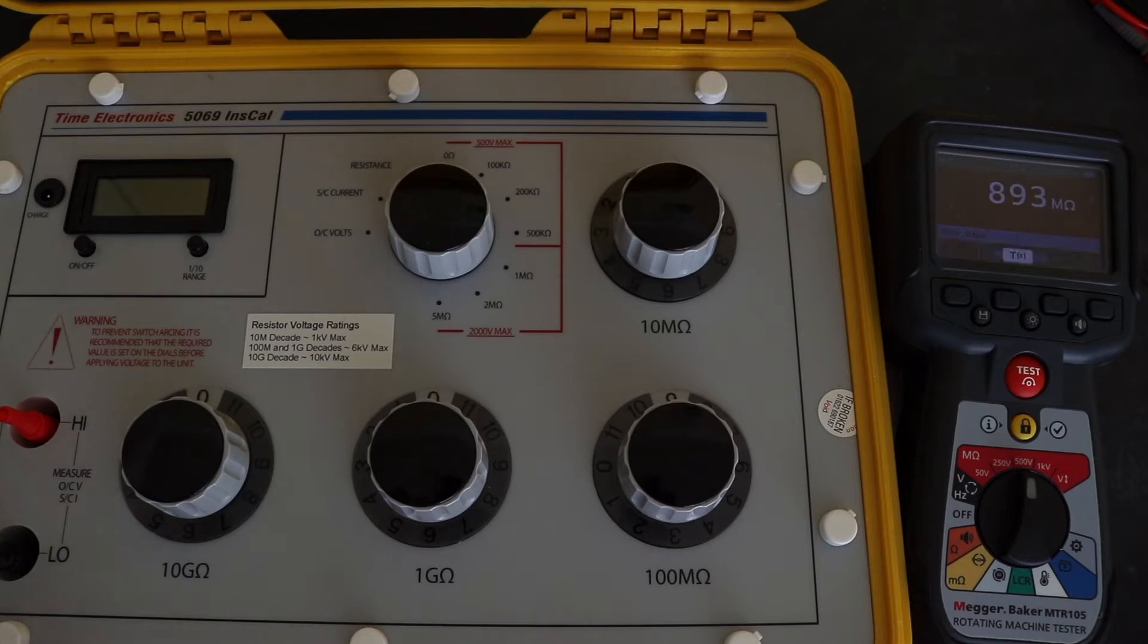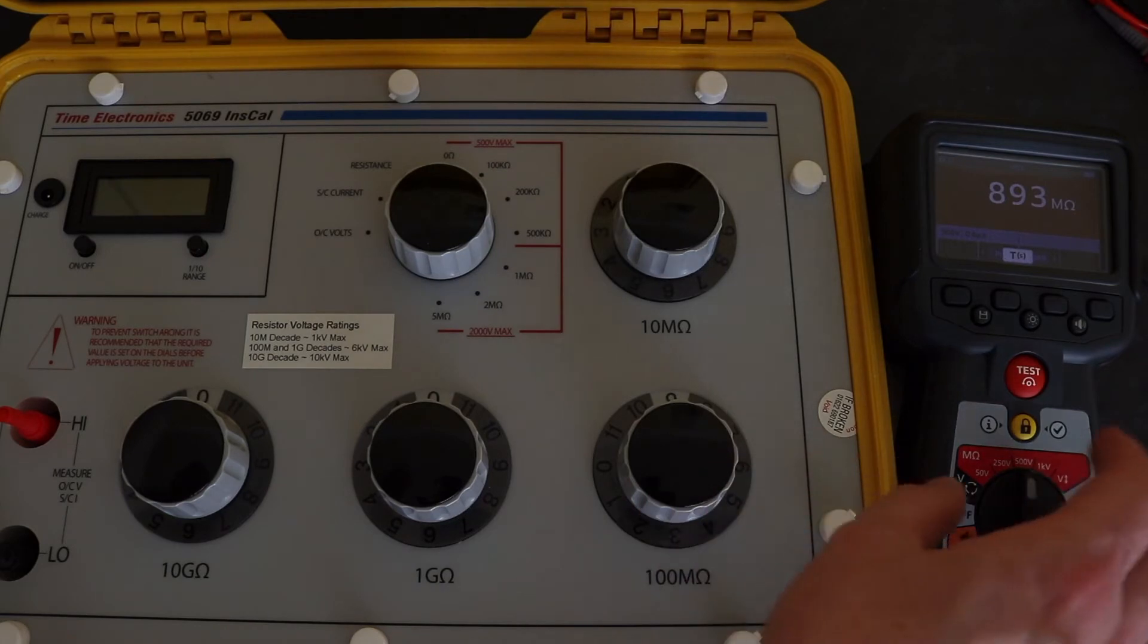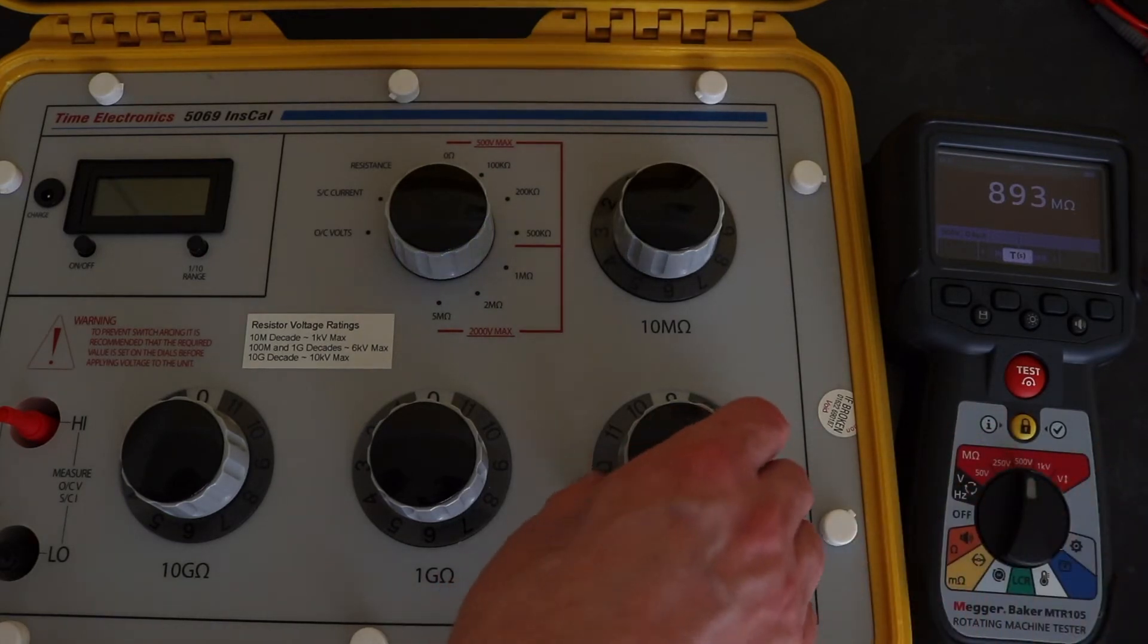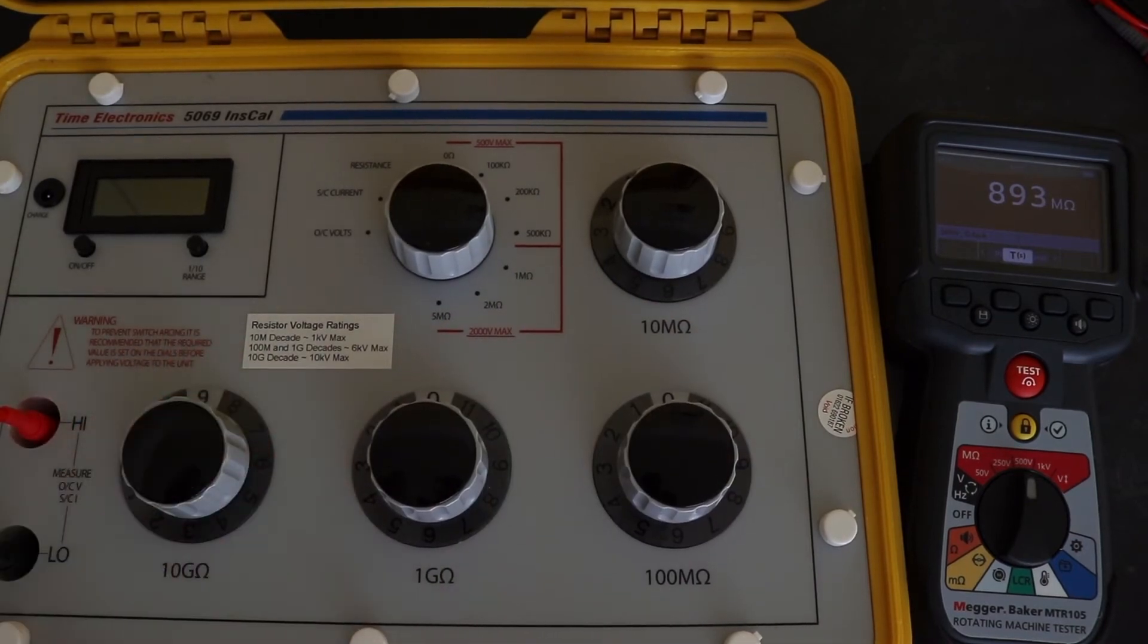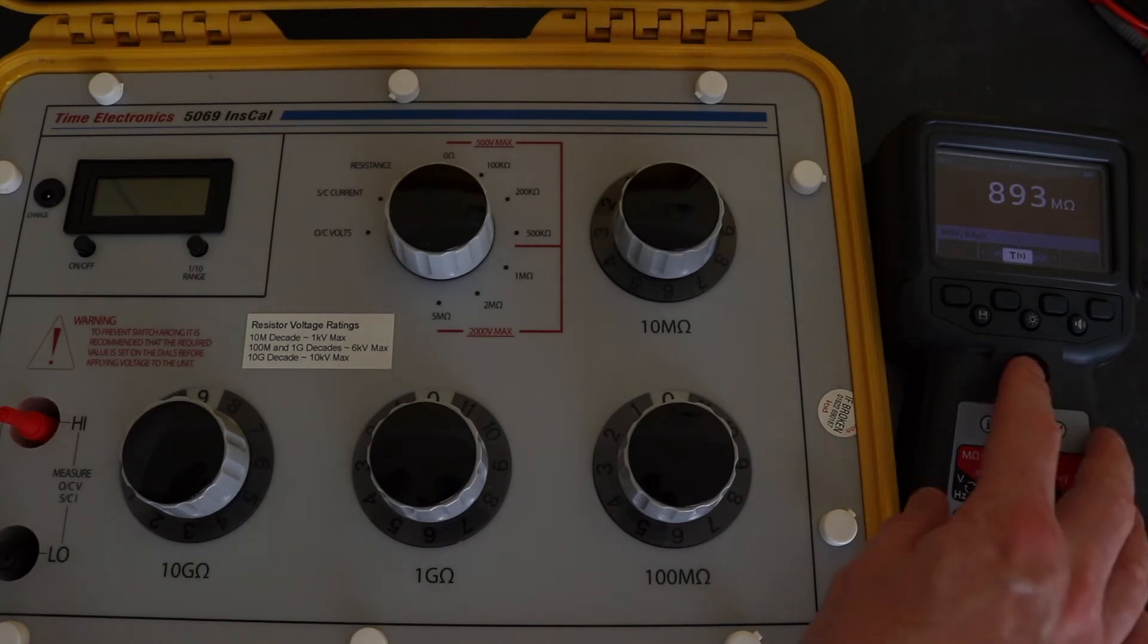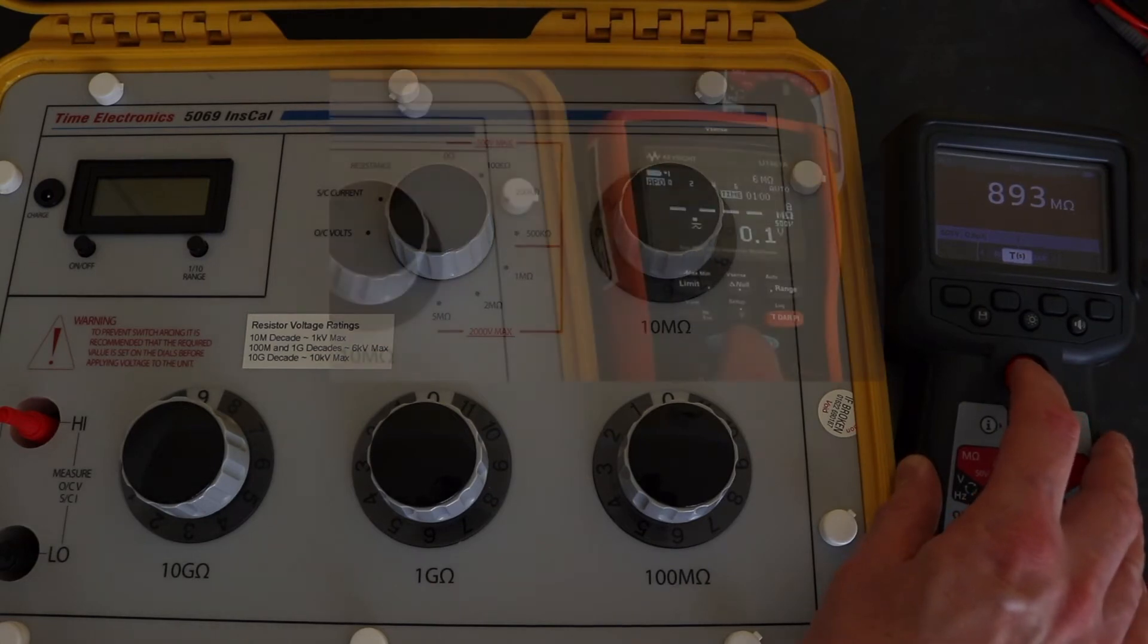So you find that happens when you get into the high 100 meg, 1 gig ohms and 10 gig ohms ranges on the decade box. What I will do is I will set this up for a 500 volt test for one minute at 90 giga ohms and we'll see what value it comes back with. I'll then do the same test using the U1461A.